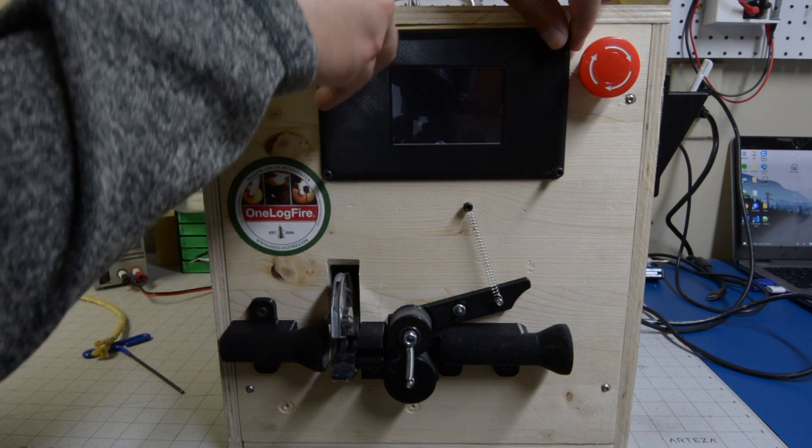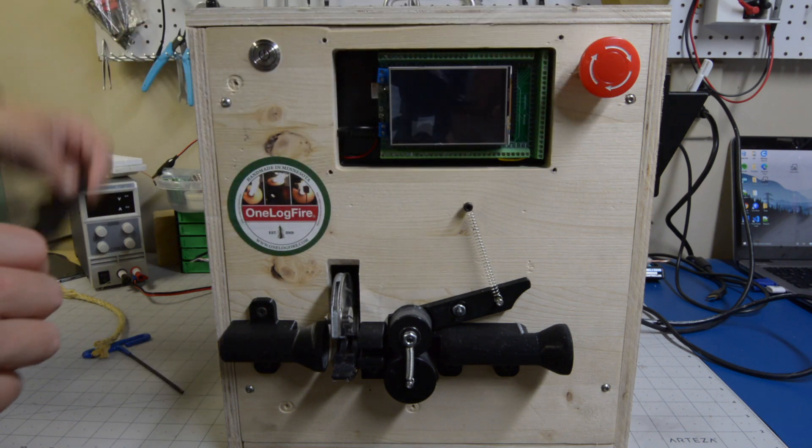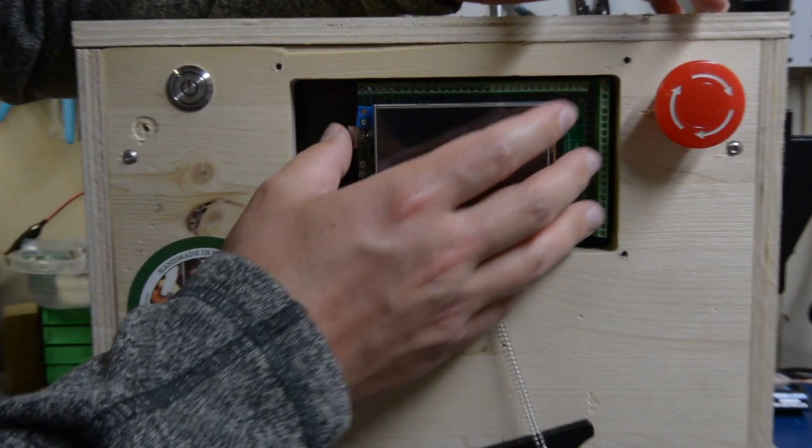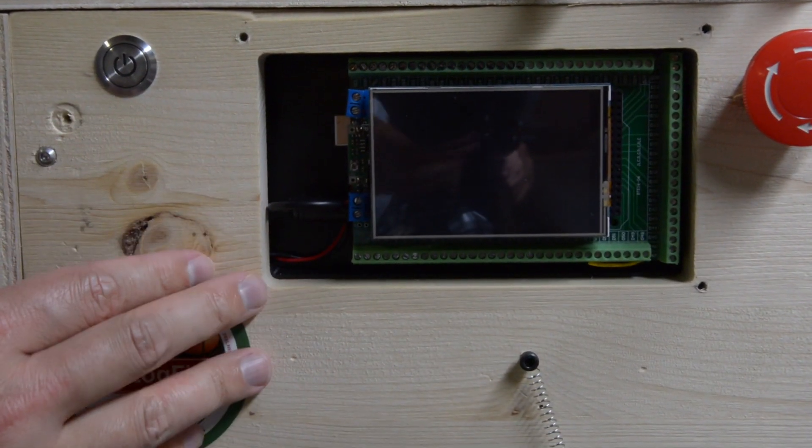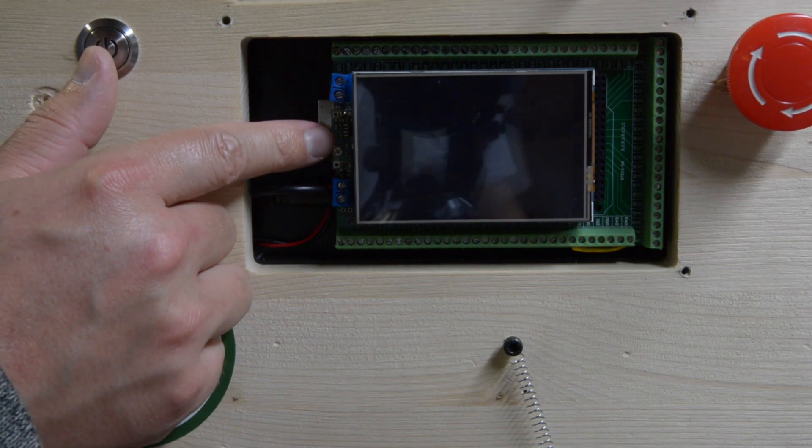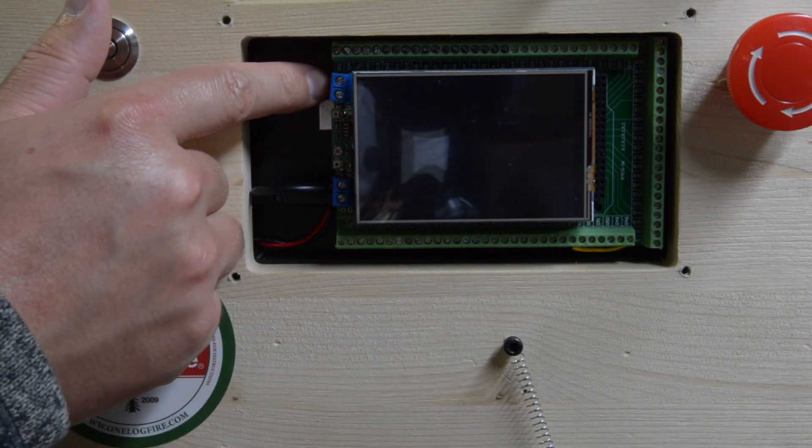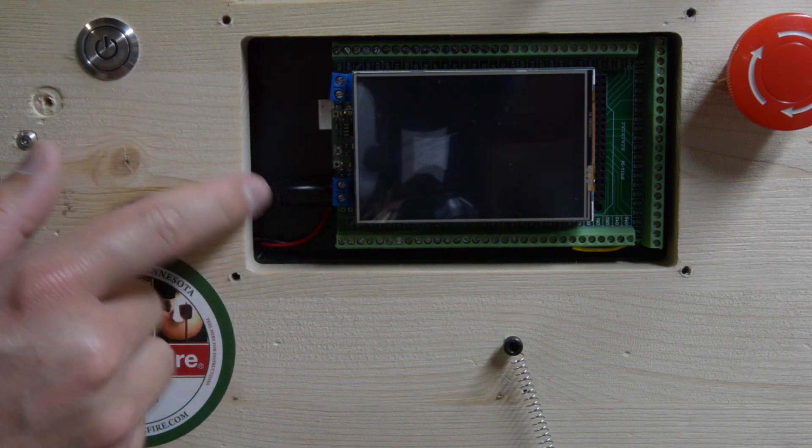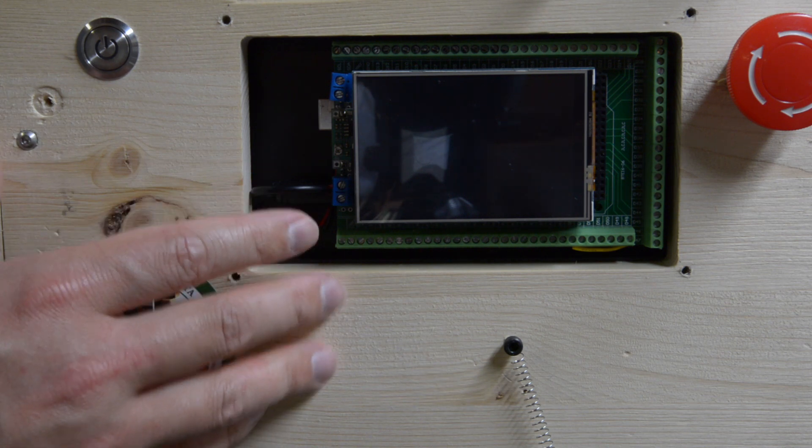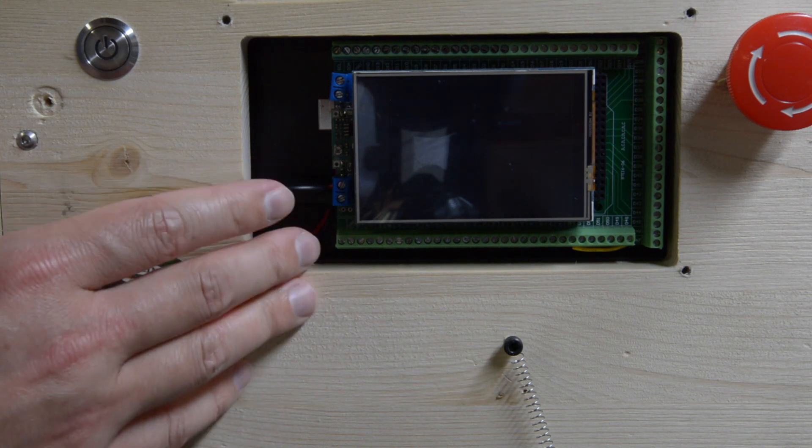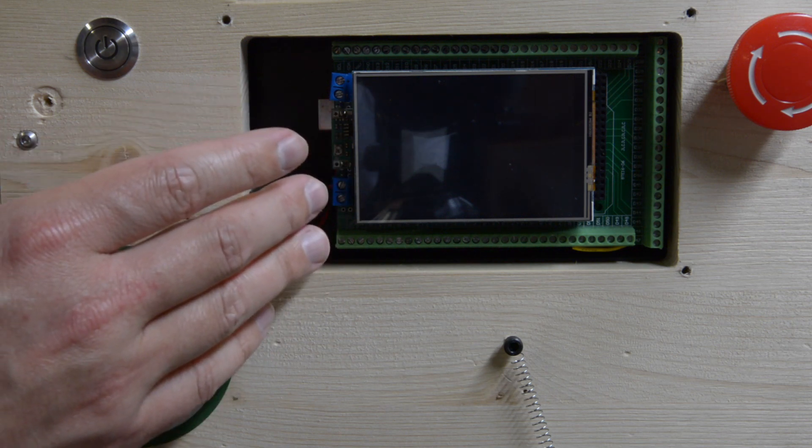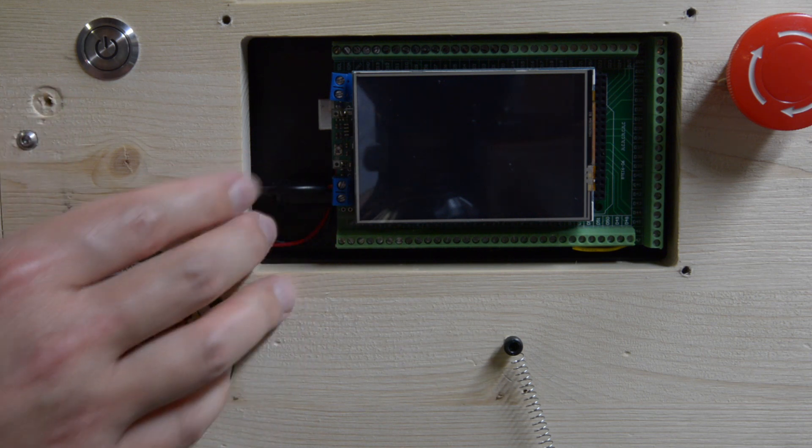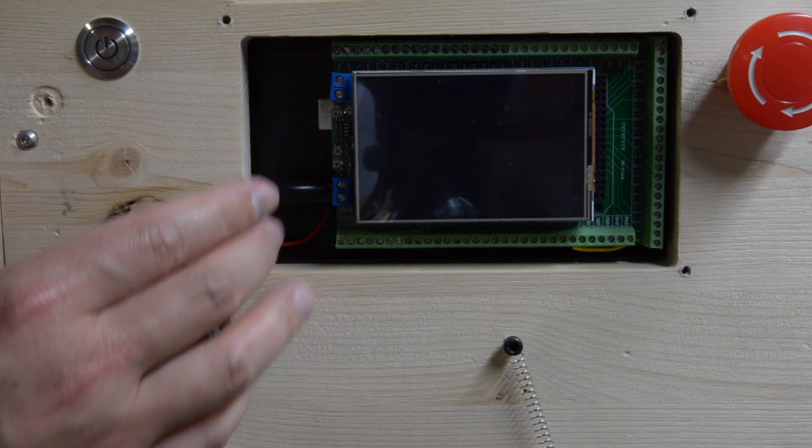Right here we've got our 3.5 inch TFT touch screen display which is run on an ILI9486 micro driver and is interfaced to the Arduino Mega which is our main microcontroller. Right here we've got a buck converter which takes in our 12 volts from the power supply, bucks it down to 7 volts and safely feeds it into the Arduino Mega. The reason for the buck converter is the Arduino Mega voltage regulator cannot dissipate that much power when dropping from 12 volts to its operating voltage of 5. So dropping from 7 volts to 5 volts the regulator is able to handle that power dissipation.